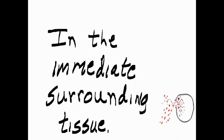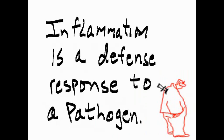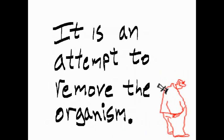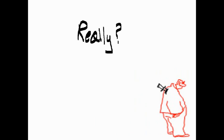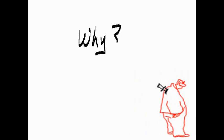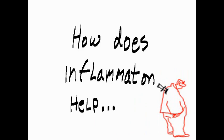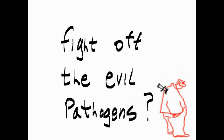The inflammation occurs in the immediate surrounding tissue. Inflammation is a defense response to a pathogen — it is an attempt to remove the organism. Wounds and infections would never heal without inflammation. How does inflammation help fight off the pathogens?